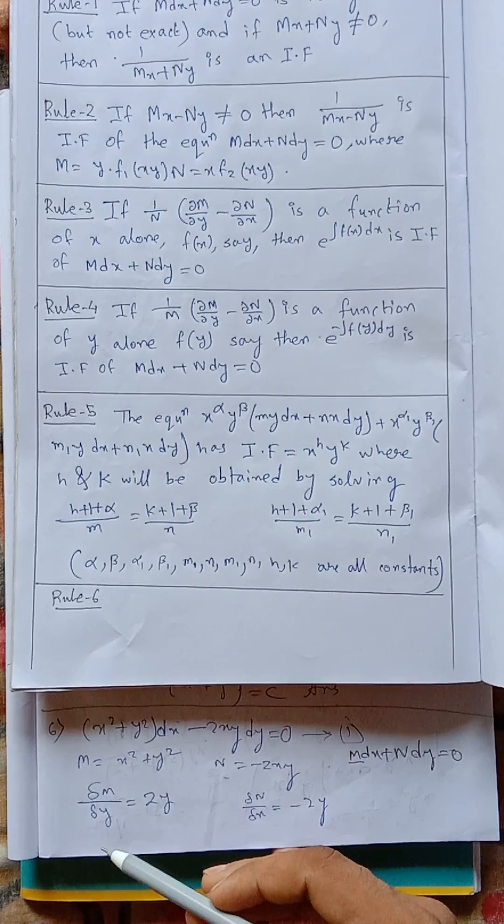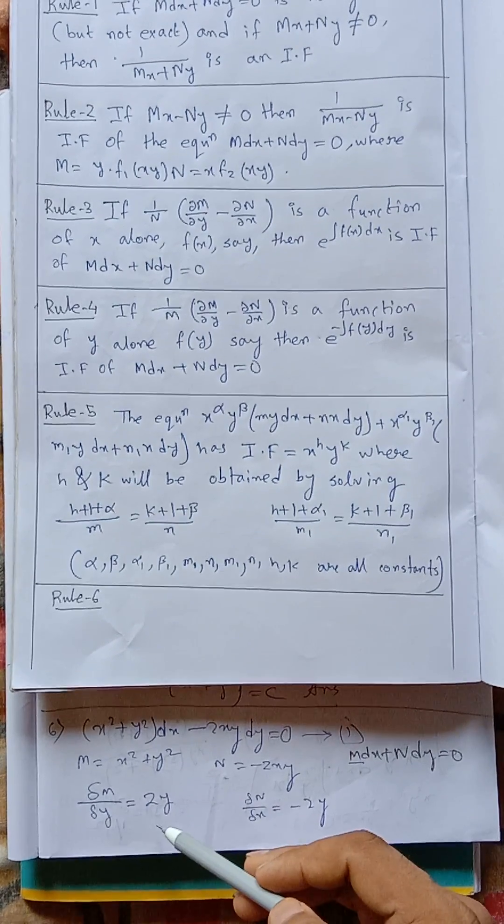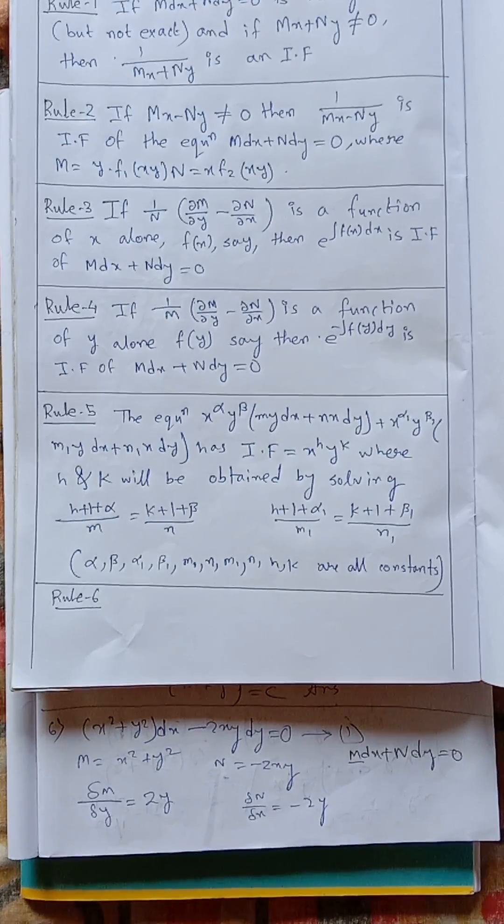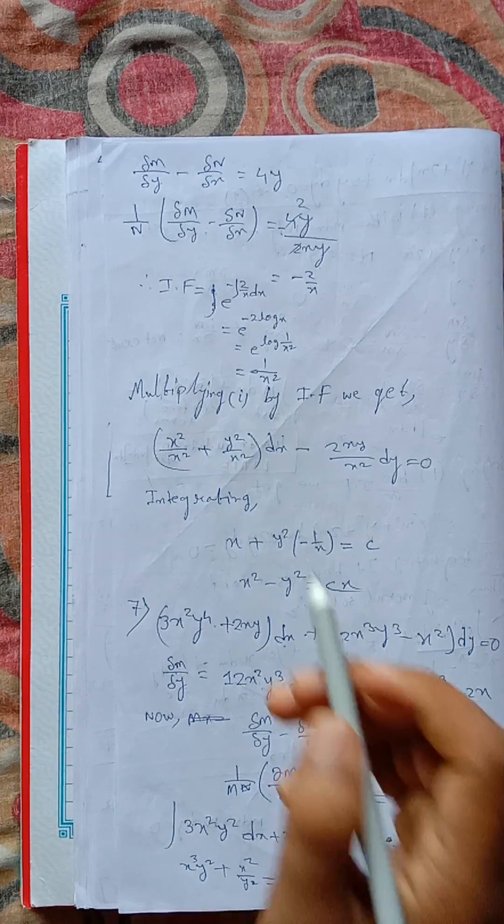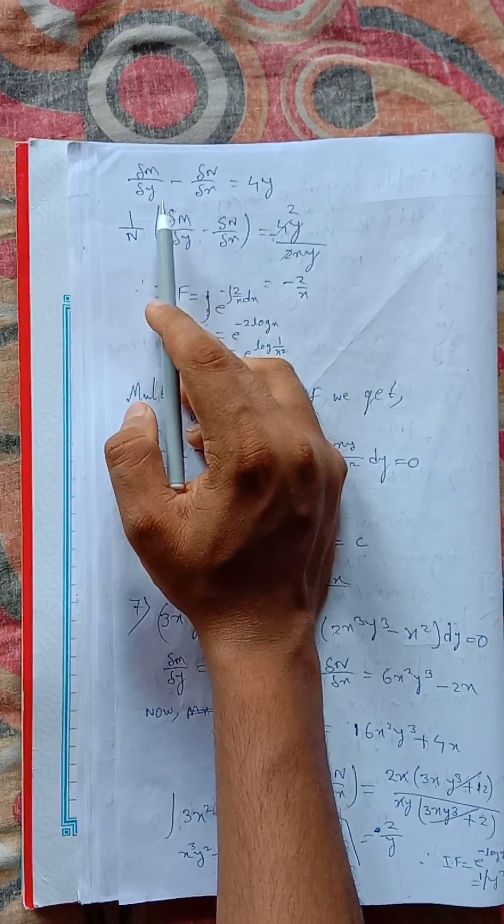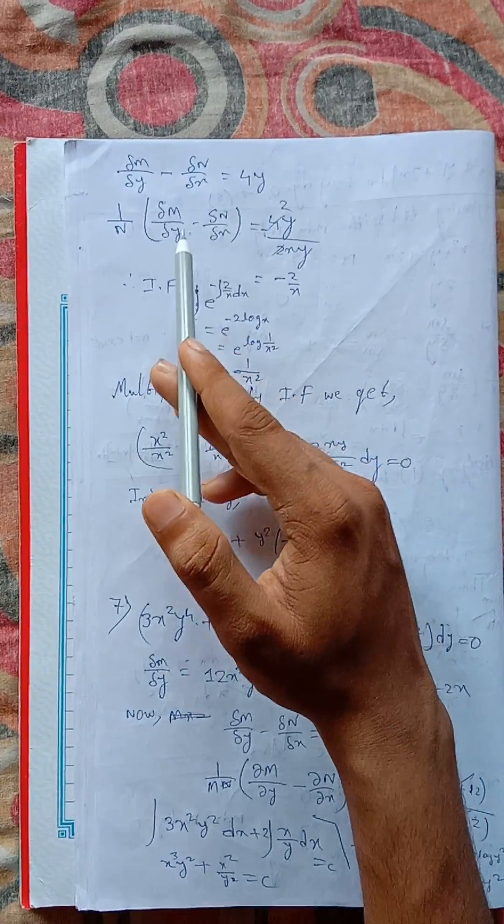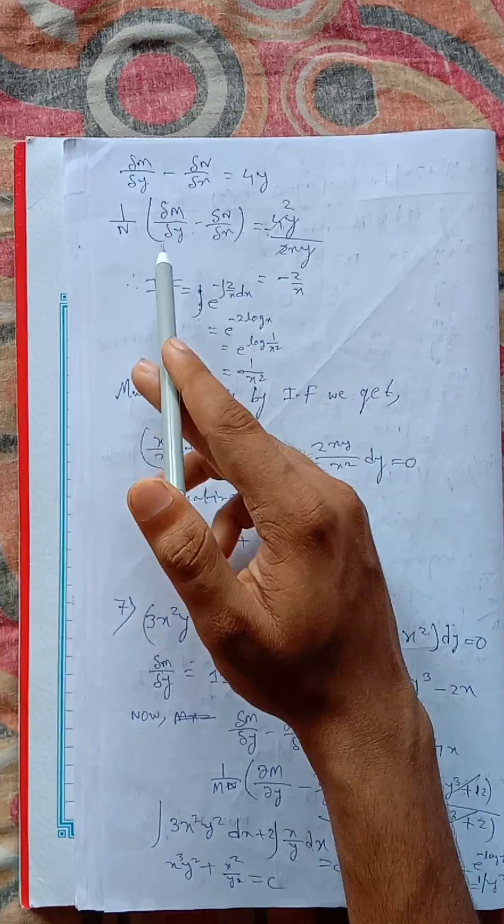Then del m del y, which is partial differentiation, del m del y equals 2y and del n del x equals minus 2y. Then del m del y minus del n del x equals 4y.